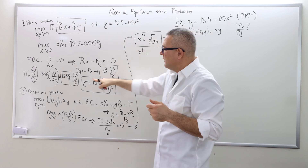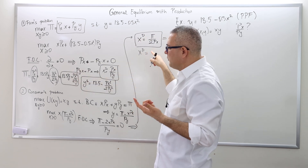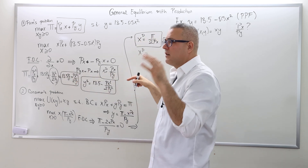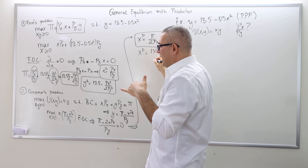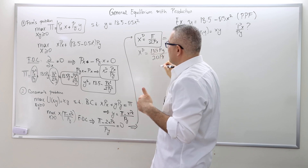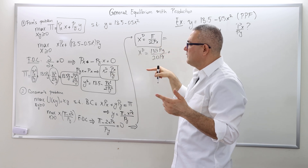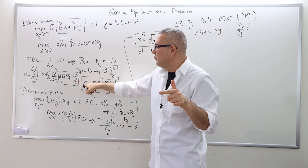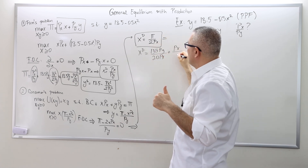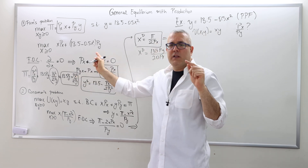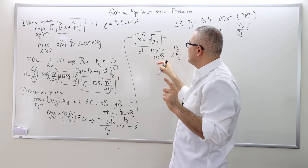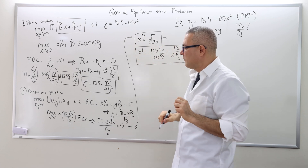So X_D equals π divided by 2·PX. Plugging in π = 13.5·PY + PX²/(2PY) and writing 13.5 as 135/10, dividing by 2PX gives: X_D = 135·PY/(20·PX) plus PX/(4·PY). This is the optimal demand for good X. I'm not going to calculate the optimal demand for good Y — there's no point, as you'll see.